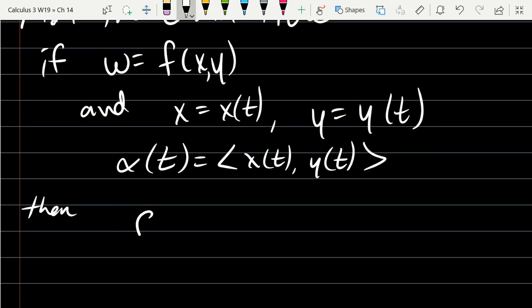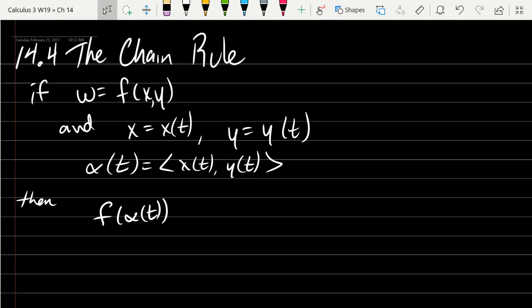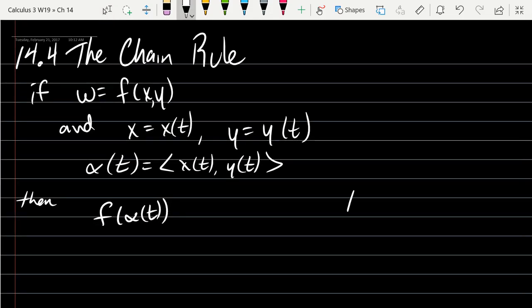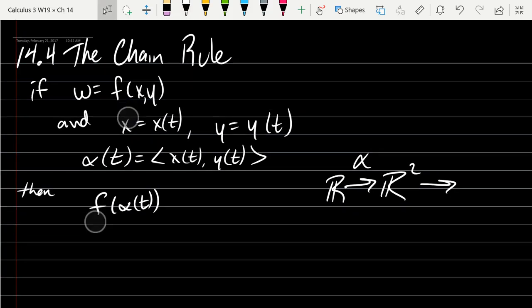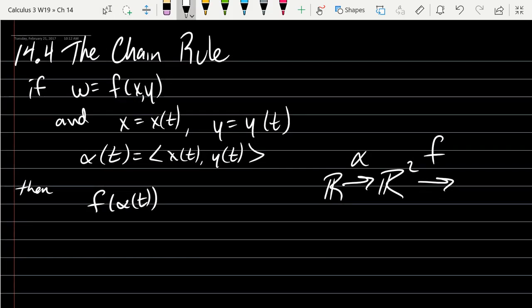Now we're going to take α and f it. And the reason we're allowed to do this is because α outputs two dimensions and f inputs two dimensions. So if you think about the way this function works right here, we have α goes from R¹ to R². And then this function f takes two dimensions and then outputs, well I didn't really write what it outputs, but the functions we're using output one dimension.